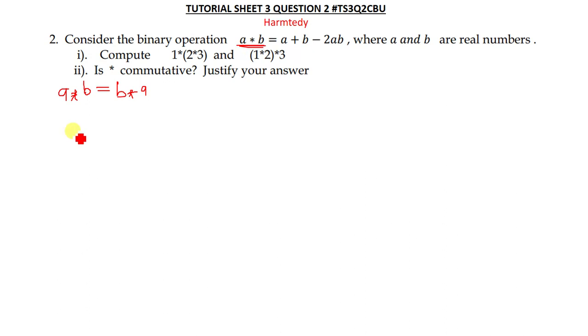We already have a⋆b, we can now find b⋆a. Let's find b⋆a. This time we just use letters. We already have a⋆b, let's now find b⋆a. So b⋆a will just be b + a - 2ba.